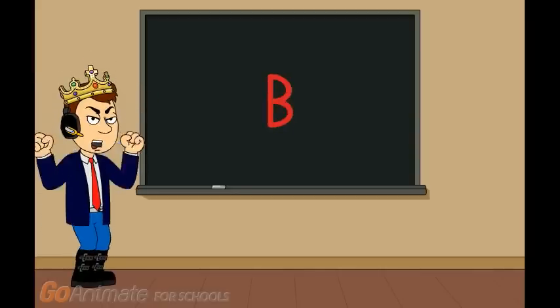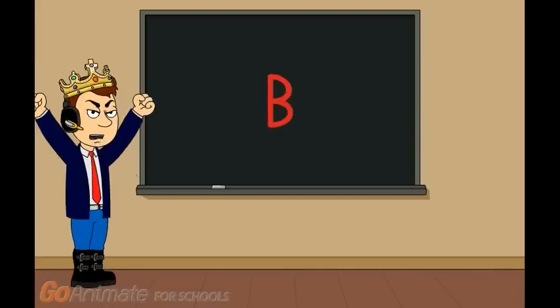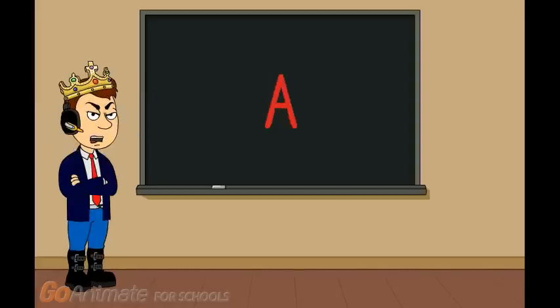B means you are suspended for 13,000 years. And A means death meat, and you will be expelled forever.